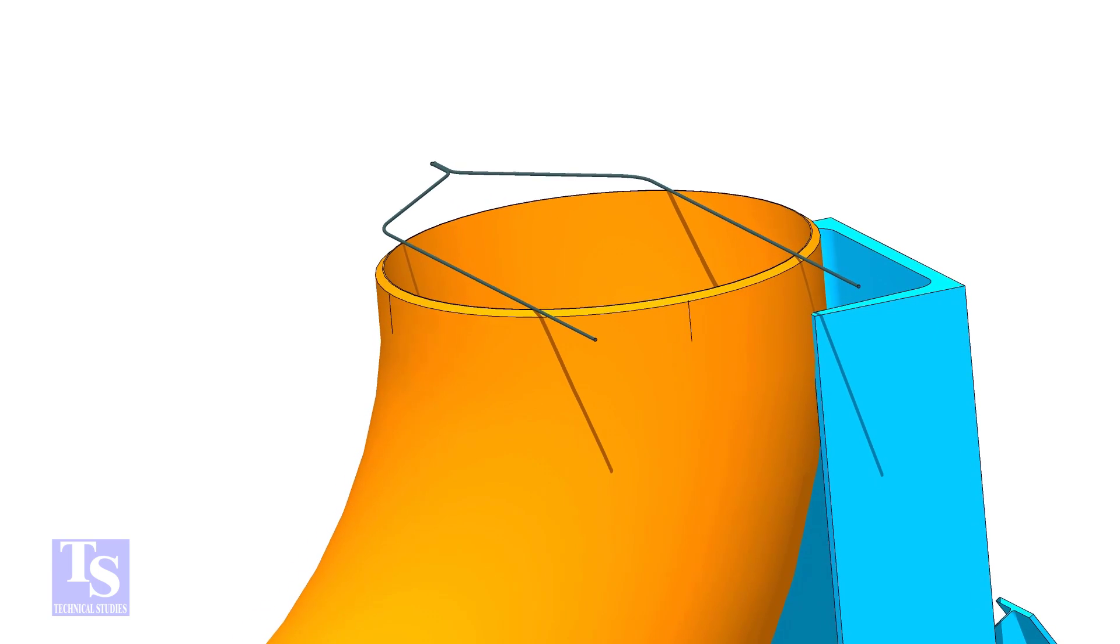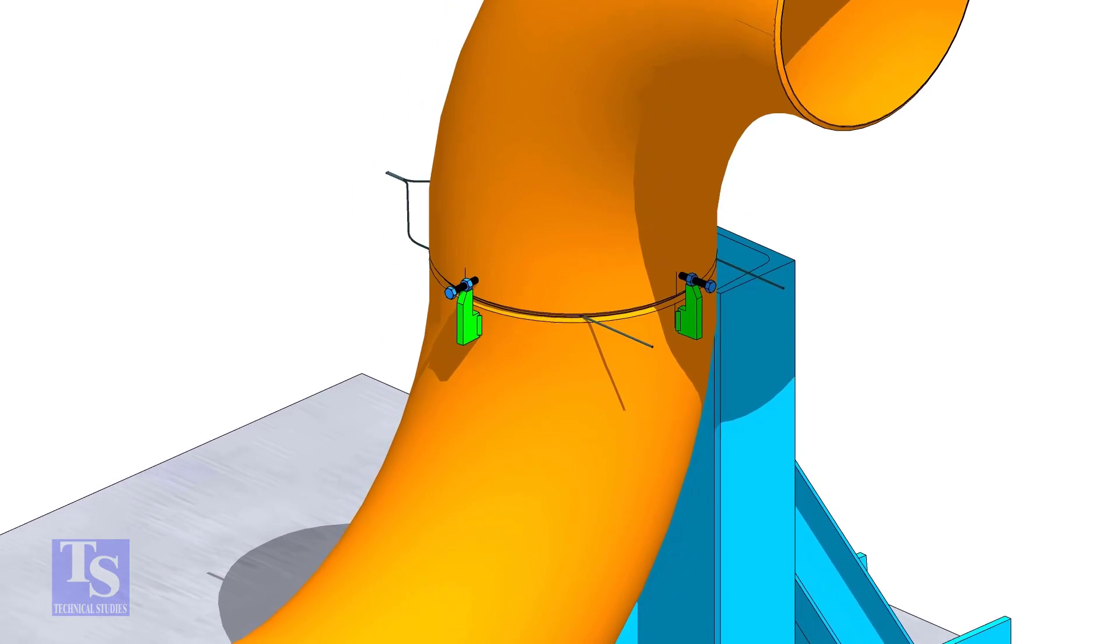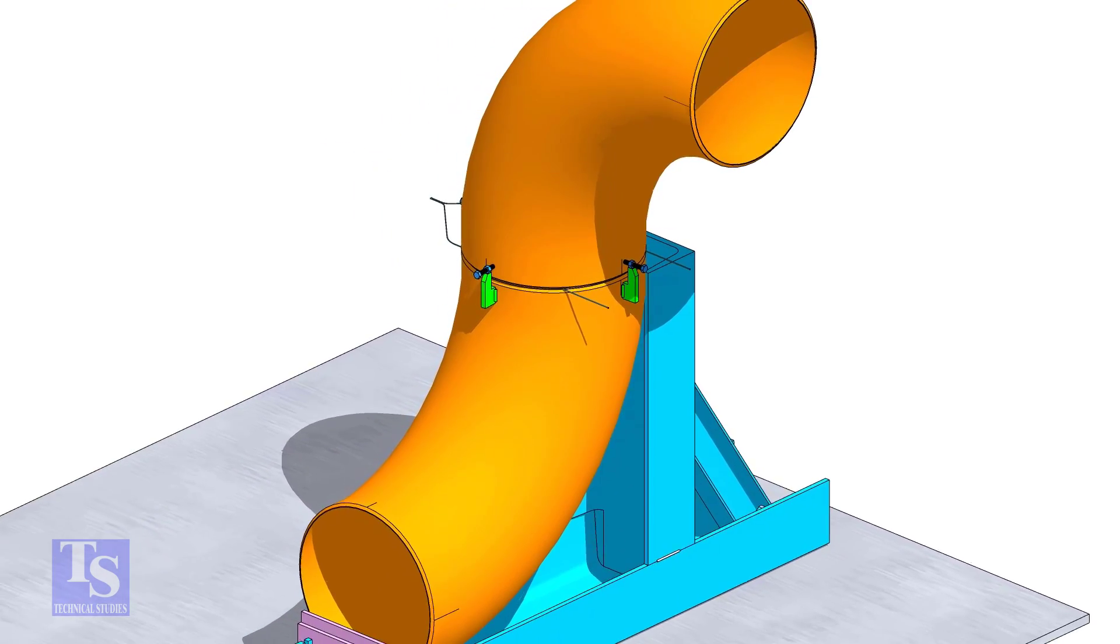Put the gap rod on the top face and tack weld four numbers jack bolts as shown. Put the other elbow and match the center lines in which direction you want to rotate the elbow.